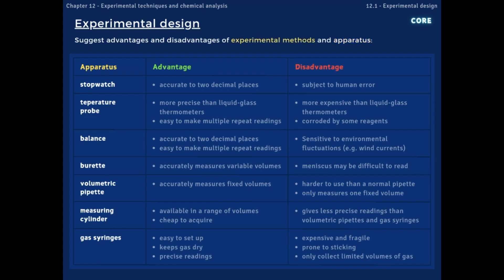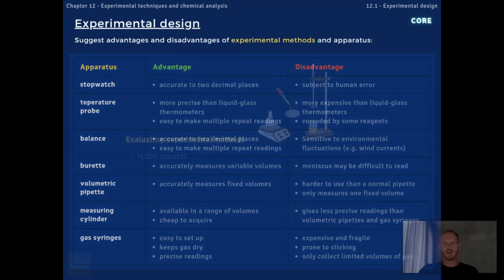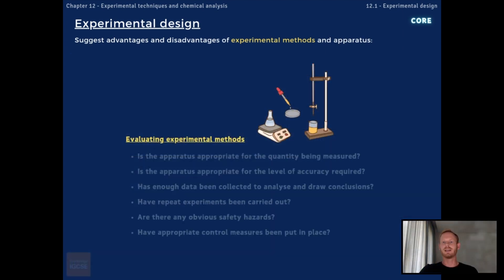Now in your exam, you may also be required to evaluate an experimental method. Note that we already covered this in some detail in topic 6.2, which I'll put a link to in the description below. Now whilst your knowledge of practical techniques in chemistry should help you to spot weaknesses in the design and suggest improvements, you might also benefit from considering whether the apparatus chosen is suitable for the quantity being measured and the level of accuracy required.